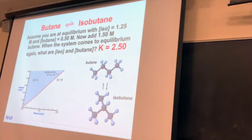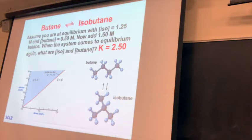At equilibrium there was 1.25 mL of the iso and 0.50 mL of the regular butane. Products divided by reactants confirms that you're at 2.50. This graph shows a slope of 2.5, meaning the iso to butane ratio will be this 2.5 ratio at any point along the equilibrium line.